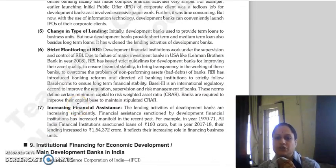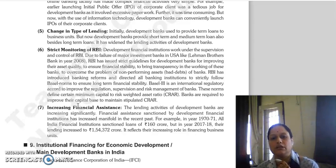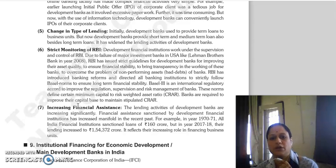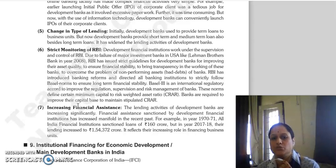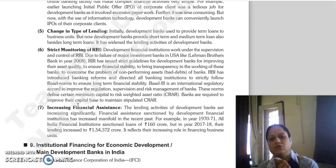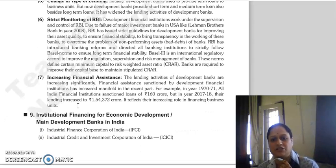Next is change in type of lending. Initially development banks only provided term loans, but lending activities have since widened. Under strict monitoring of RBI, development financial institutions work under RBI supervision and control. In accordance with the Basel III international regulatory accord, regulation, supervision, and risk management in banks have improved, and banks have also had to improve their minimum capital to risk weighted asset ratio.